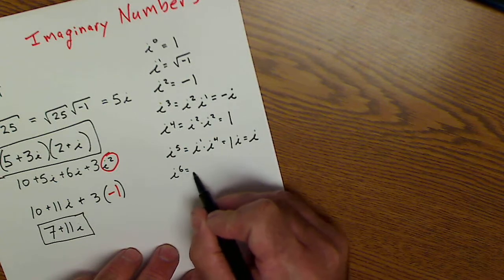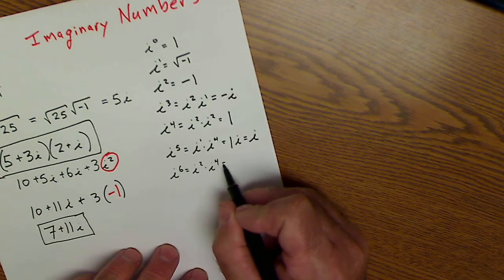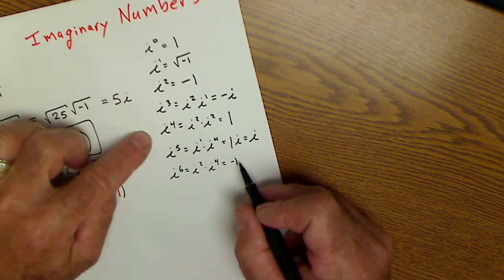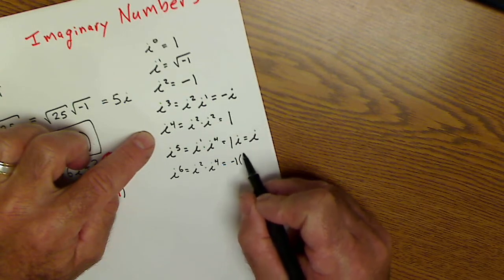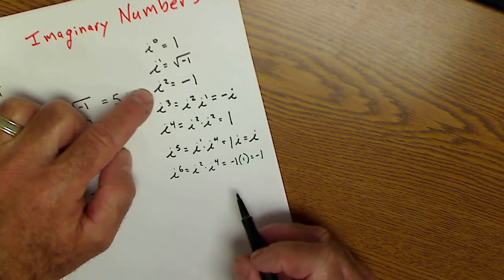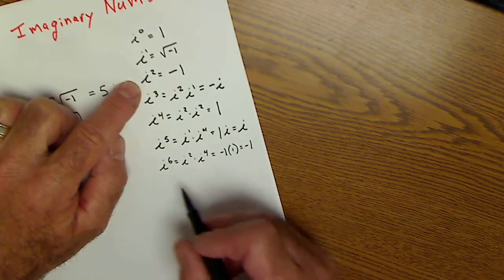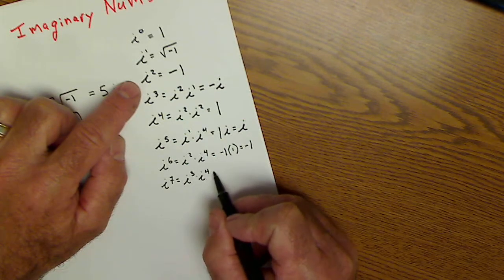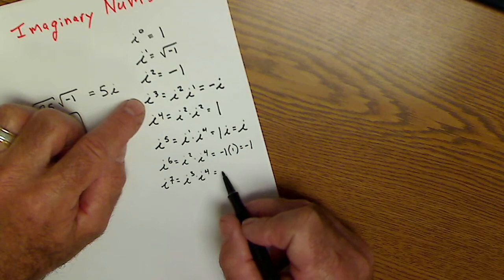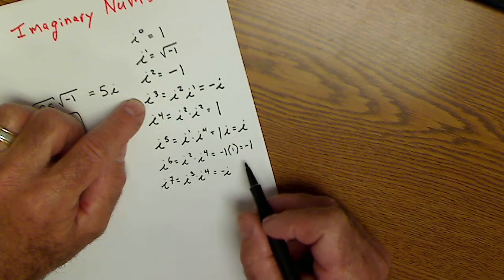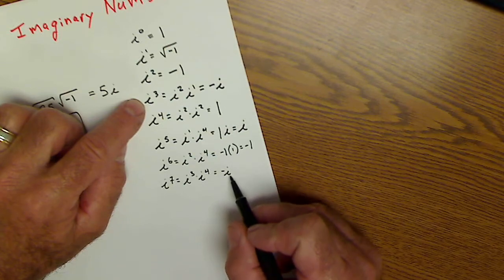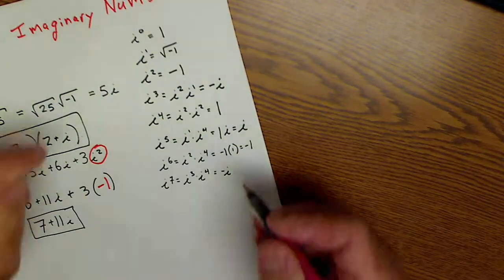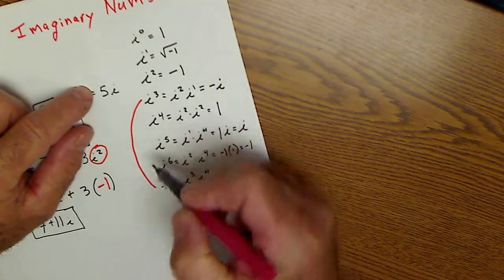i to the sixth would be i squared times i to the fourth. i to the sixth would be i squared negative 1 times i to the fourth 1 or just negative 1, the same as i squared. i to the seventh would be i to the third times i to the fourth. i to the third is negative i times i to the fourth, which is 1 or just negative i. So I could see that i to the third and i to the seventh are the same.